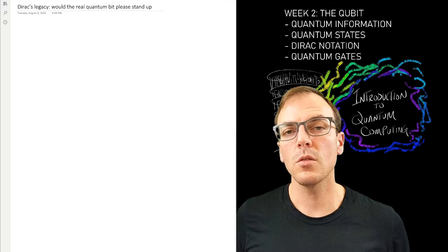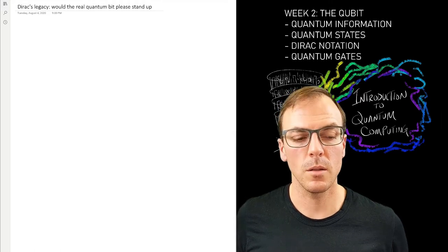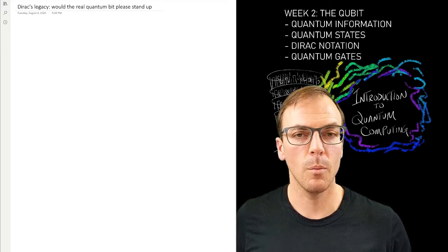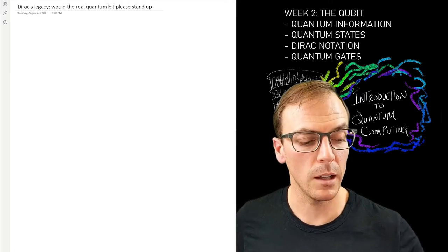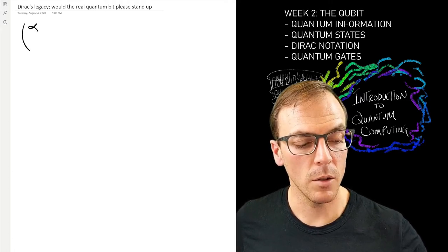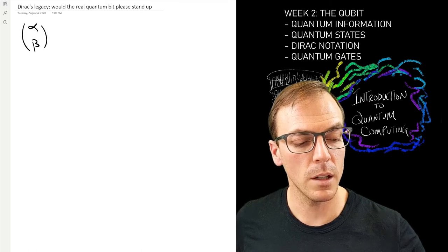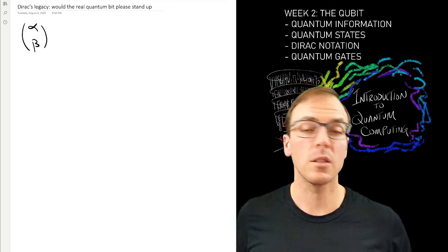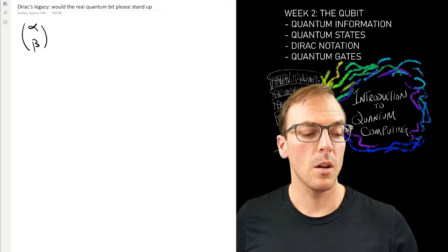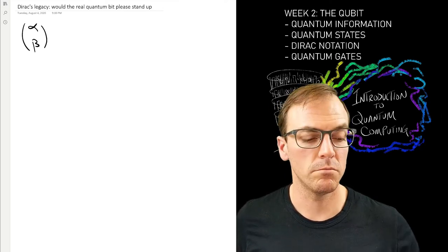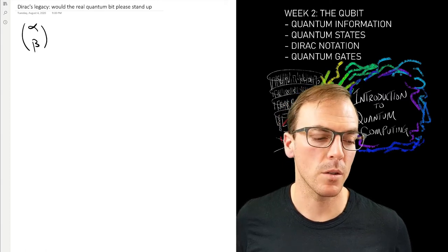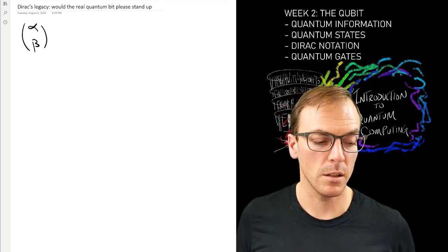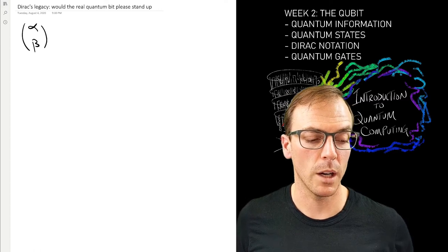I used some notation for qubits that may be unfamiliar to you even if you know the linear algebra. If you know a little bit of linear algebra, you might see these column vectors where I've chosen Greek letters. That's the convention if I'm thinking about complex numbers.